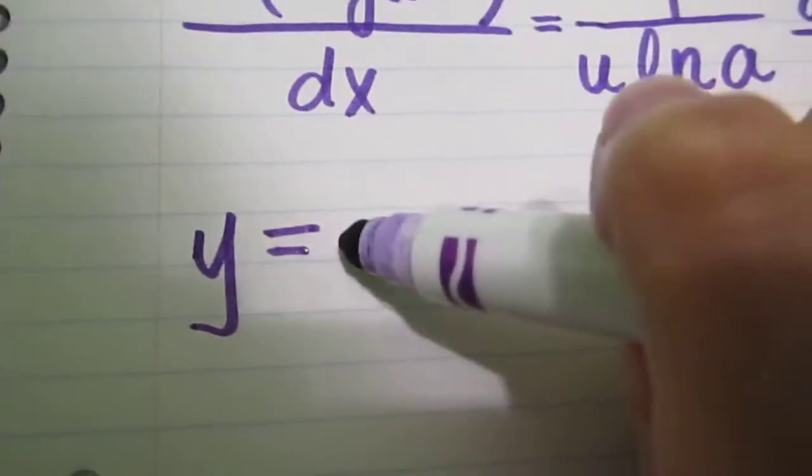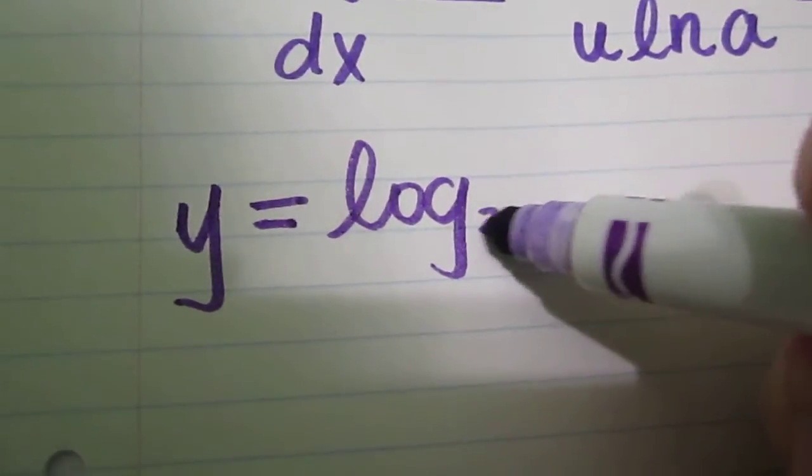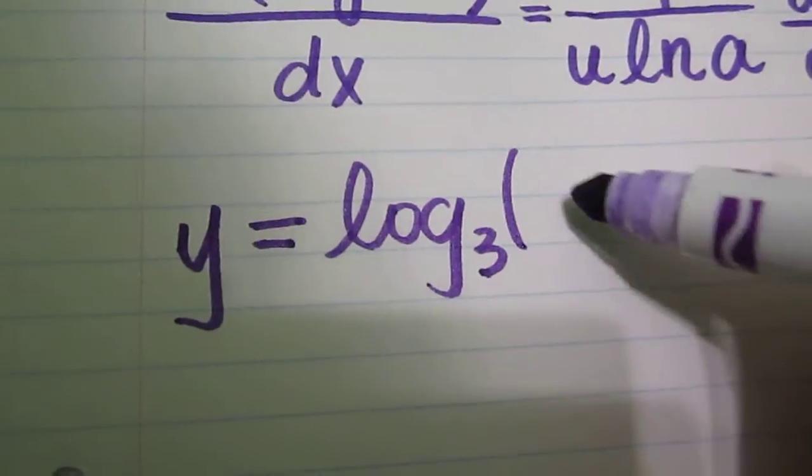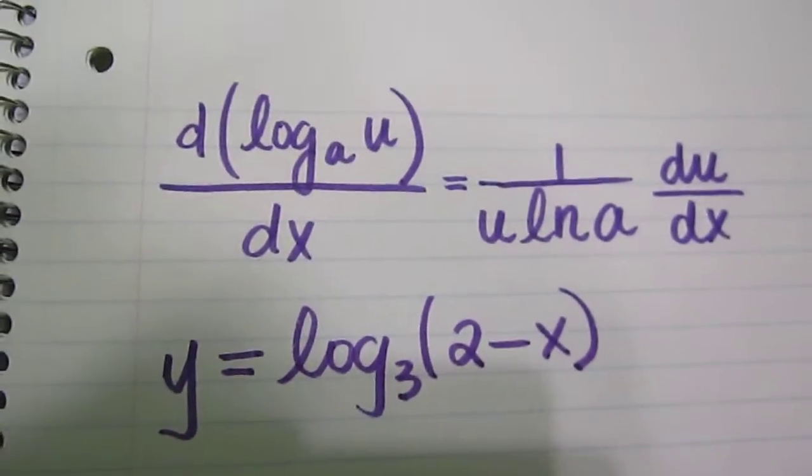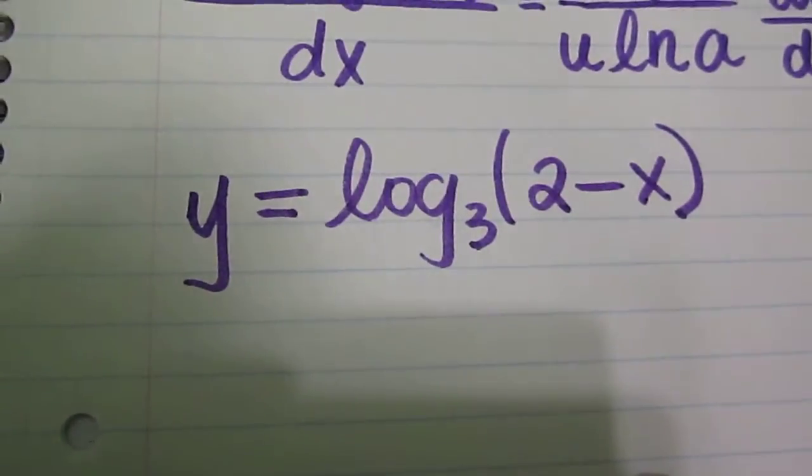Let's say you have y equals log base 3 quantity of 2 minus x. So we're going to use that rule to find the derivative of this.